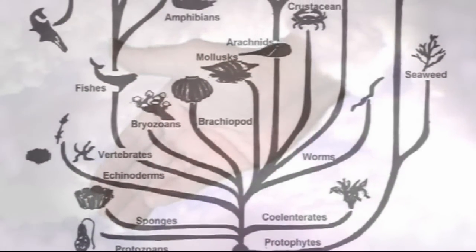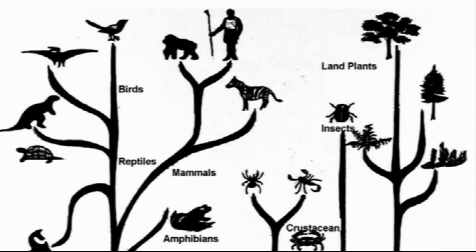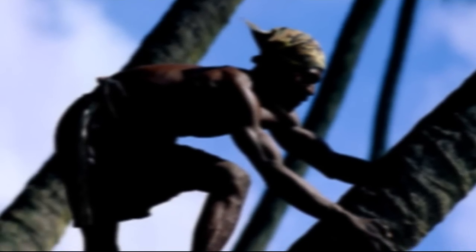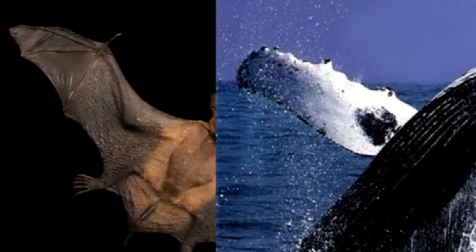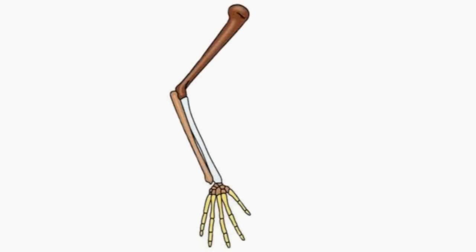In their defense, theists often claim God created life according to a plan. Therefore, it is not surprising we observe similarities in anatomical structures between different species. Although this might explain the similarities between the forearms of primates and humans, surely the best way to design the infrastructure of a bat's wing is not also the best way to build a whale's flipper. Such anatomical particularities make no sense if the structures are uniquely engineered and unrelated. The forelimbs, wings, flippers, and arms of different mammals are variations on a common structural theme.